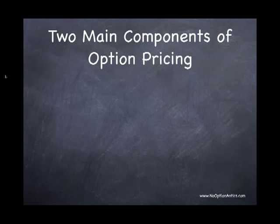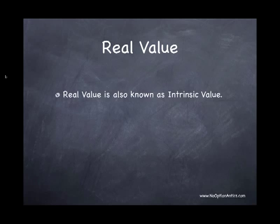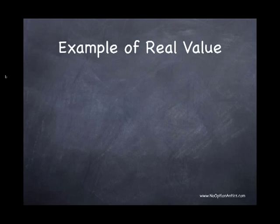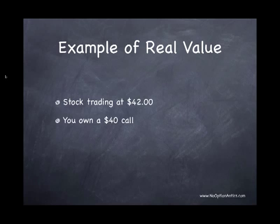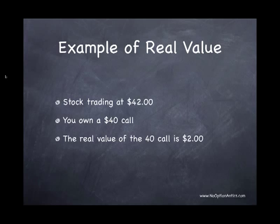Let's talk about the main components of options pricing. One is the real value of the option, and the other one is time value. Real value is also called intrinsic value — it's the real tangible value of an item. For example, let's say you have a stock trading at $42 and you own a $40 call. The $40 call gives you the ability to buy stock at $40. So the real value of the $40 call is $2, because if the stock is trading at $42 and you can buy it for $40, you have $2 of advantage or real value.